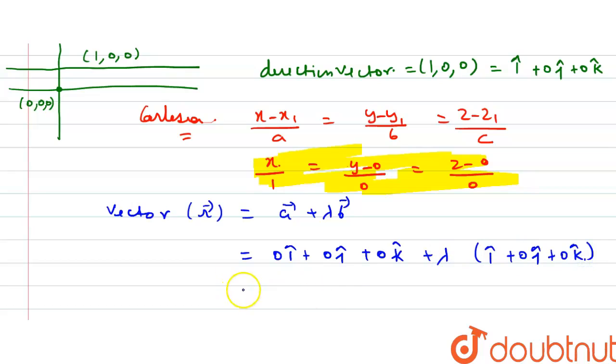B-vector here is the direction vector. So our equation is lambda times i-cap, which is our vector equation in this question.